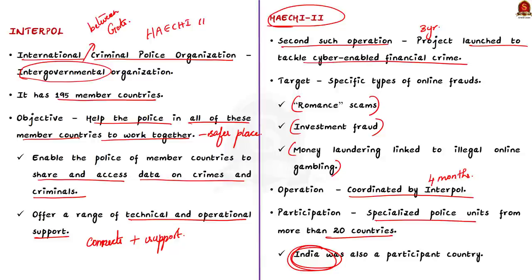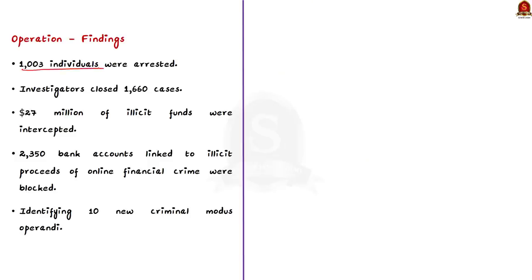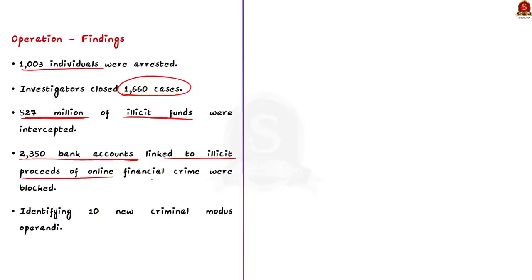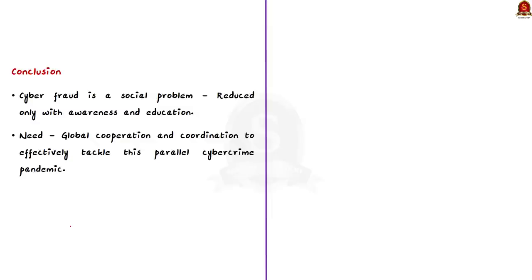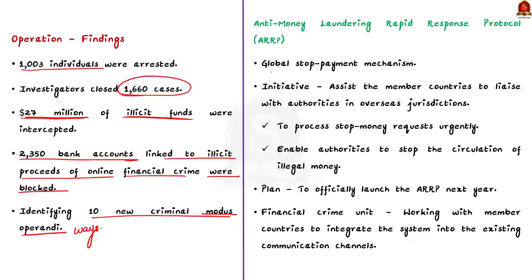At the end of the operation, around 1,003 individuals were arrested and investigators closed 1,660 cases. The operation helped in intercepting about 27 million dollars of illicit funds. In addition, around 2,350 bank accounts linked to illicit proceeds of online financial crime were blocked. The operation also helped in identifying 10 new criminal modus operandi. Interpol officials pilot-tested a new global stop payment mechanism called Anti-Money Laundering Rapid Response Protocol, or ARRP — this initiative will help member countries liaise with authorities in overseas jurisdictions to process stop-money requests urgently.